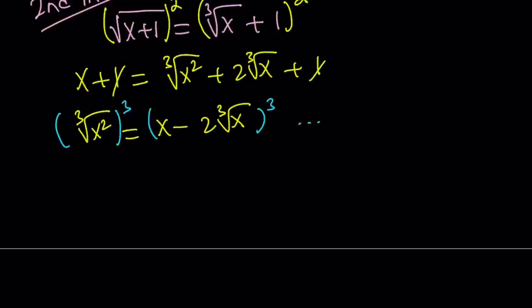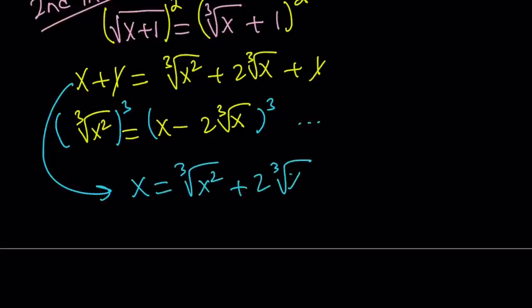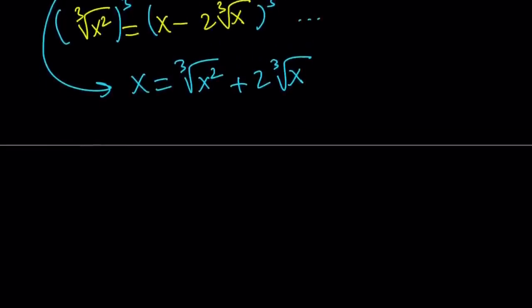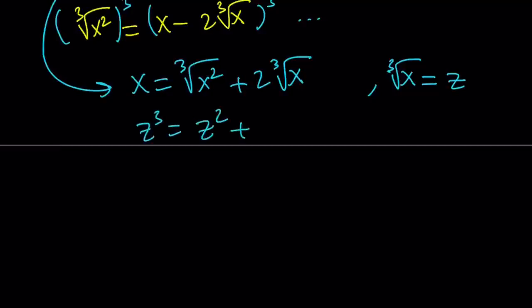So here's what we're going to do instead. Instead of just trying to cube and square both sides all the time, we're going to use substitution, which makes a lot of sense. We have x equals cube root of x squared plus 2 times the cube root of x. It's nice that we don't have any constants here, so that makes it a little easier. We're going to substitute — replace cube root of x with z. Then x becomes z cubed, and cube root of x squared becomes z squared.